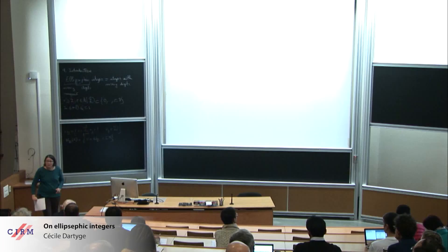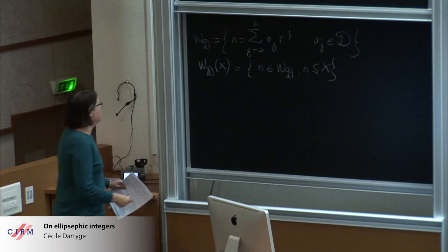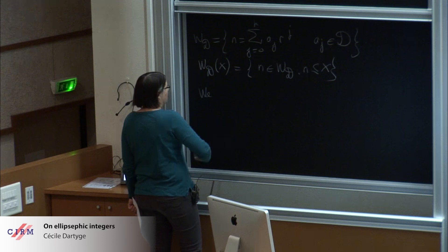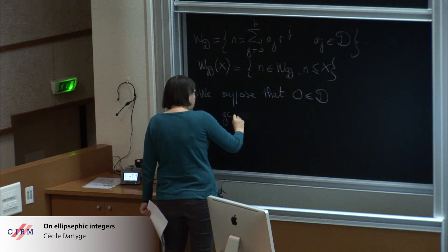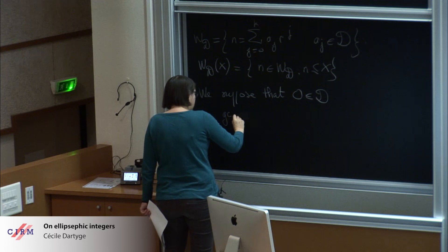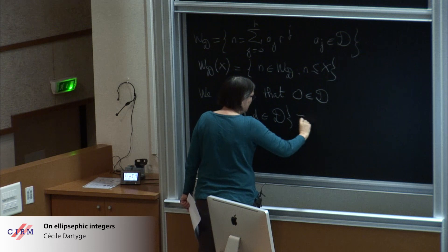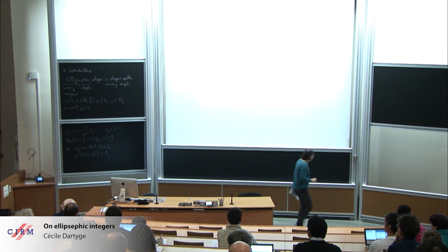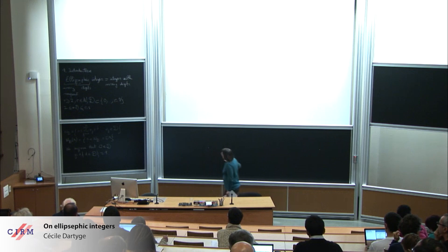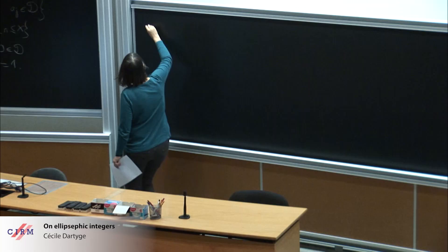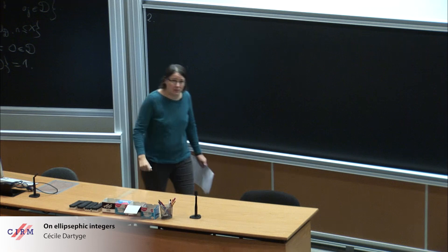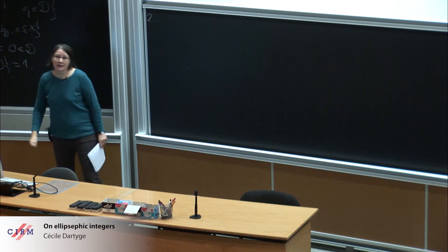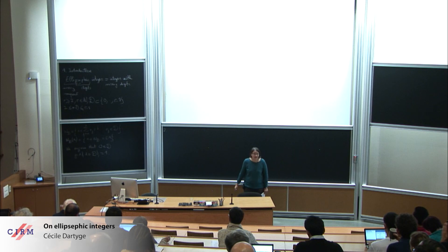Now to make the formula easier, it is good to suppose that 0 belongs to D and also that the elements of D are co-prime. I studied already in the 80s some family of sets, and in the 90s there were some results on the distribution of ellipsific numbers in arithmetic progressions.